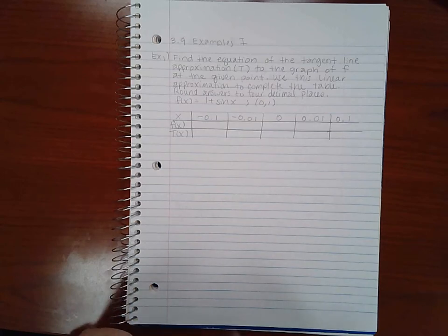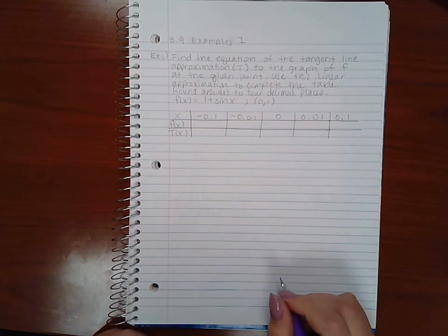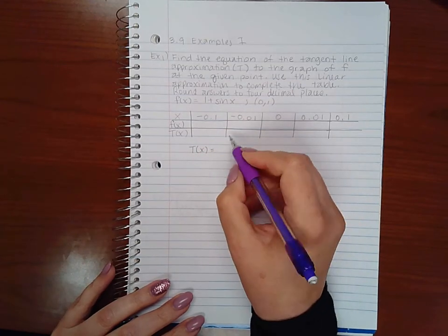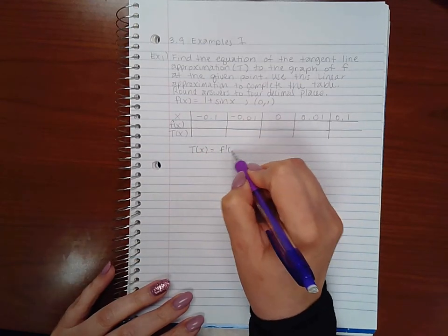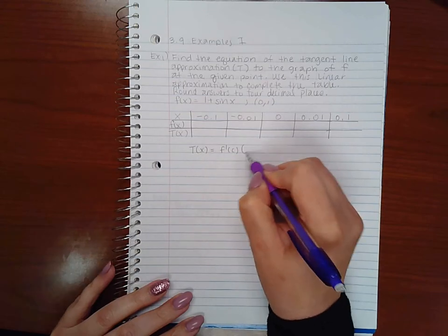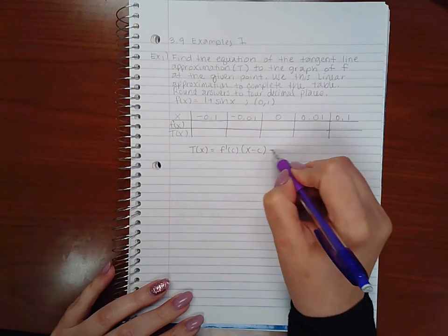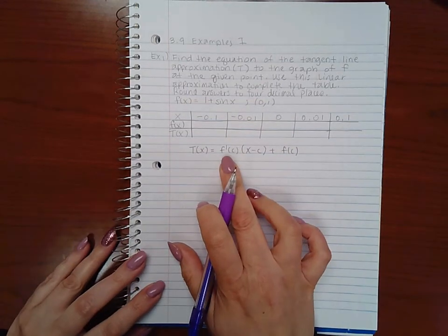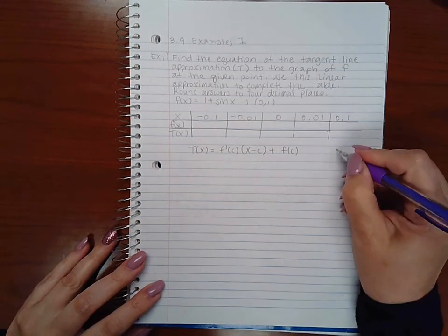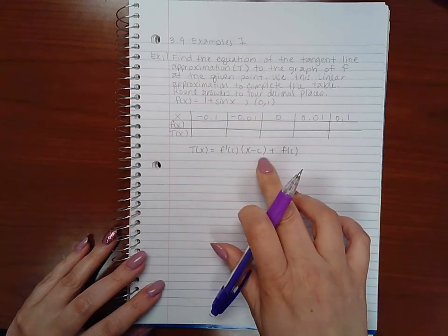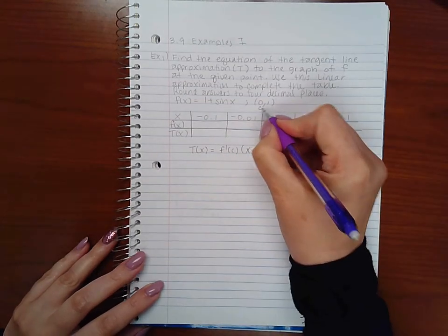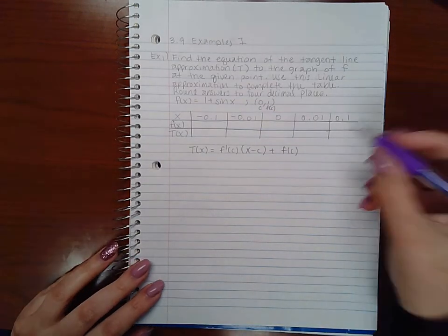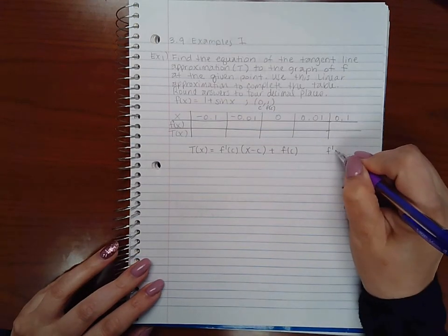Remember the formula for T(x): it's f'(c) times (x - c) plus f(c). So I need to know f'(c) and c. Well, this is the c value they gave me, c = 0, and this is the y-value f(c) = 1, but I don't know what f'(c) is yet.